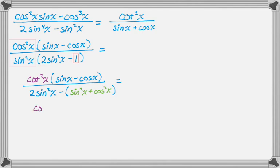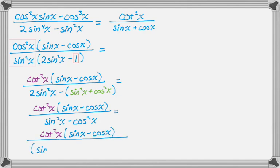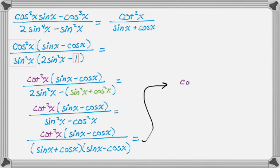I still have the numerator — cotangent squared times sine minus cosine — and somehow I have to get rid of that sine minus cosine. The denominator is going to help, because it's now sine squared minus cosine squared, which is a difference of squares — and difference of squares is really crucial on these problems. So I can factor the denominator into sine minus cosine times sine plus cosine, and then the sine minus cosine terms cancel.